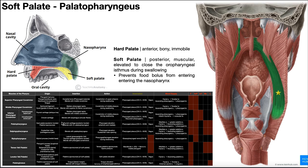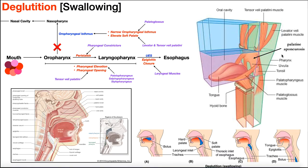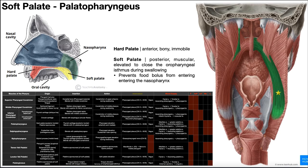The origins of palatopharyngeus are the hard palate — a bony attachment on its posterior border — and also the palatine aponeurosis. Here in the picture from the previous video, you can see the tongue, and then the uvula dangling below it, and continuous with the uvula is the palatine aponeurosis. The palatopharyngeus muscle actually comes down from the palatine aponeurosis right here.